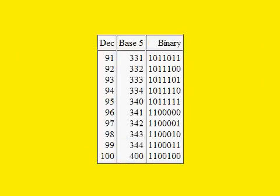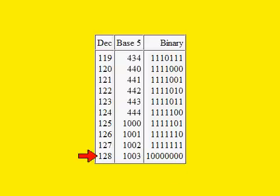Here is a table showing binary up to 100 decimal. The binary equivalent is seven positions wide. Finally, here is a table showing the binary equivalent of 128 decimal — it is a one followed by seven zeros.